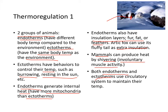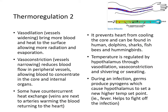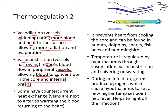Both endotherms and ectotherms use a circulatory system to maintain their temperature. Vasodilation refers to blood vessels widening, bringing more blood and heat to the surface and allowing more radiation and evaporation. Vasoconstriction is vessel narrowing that reduces blood flow into peripheral vessels, allowing blood to concentrate in the core and internal organs. Some animals have countercurrent heat exchange, where veins are next to arteries, which warms the blood returning to the heart and prevents the heart from cooling too much. This is found in humans, dolphins, sharks, fish, bees, and hummingbirds. Warm blood goes one way, cold blood goes the other, but it gets heated up.